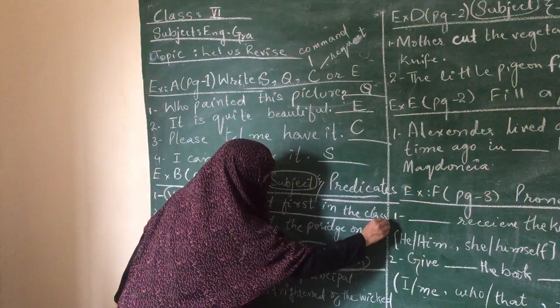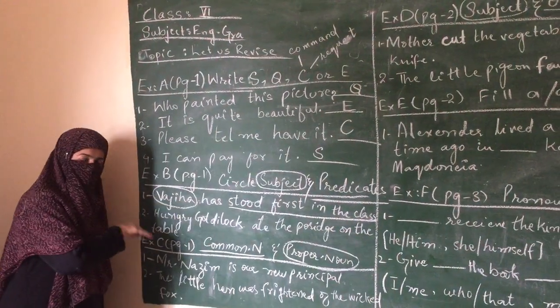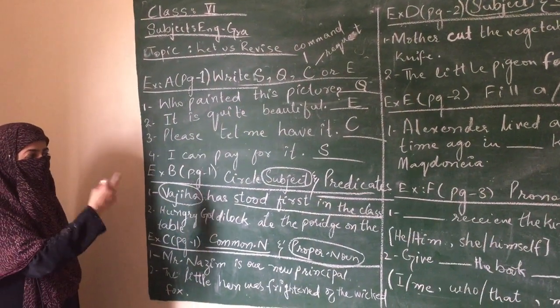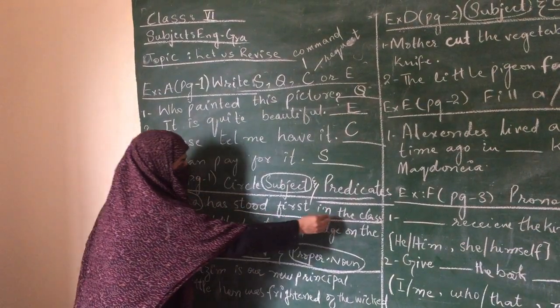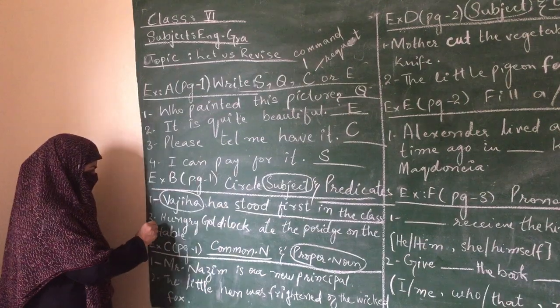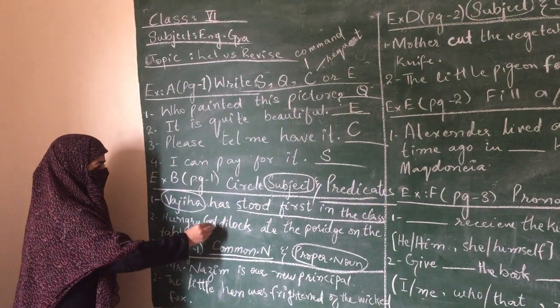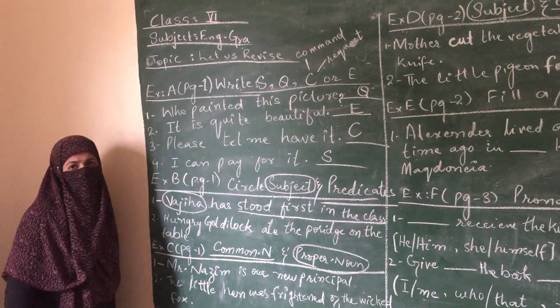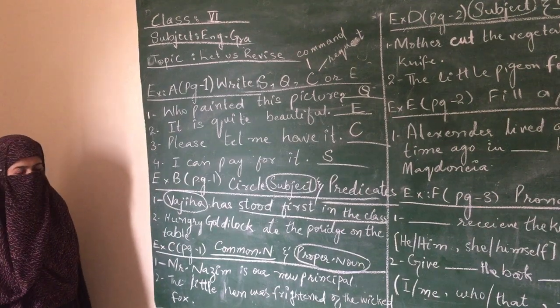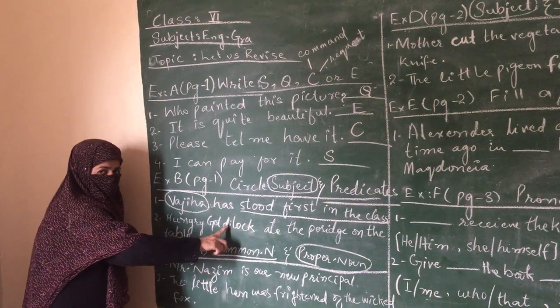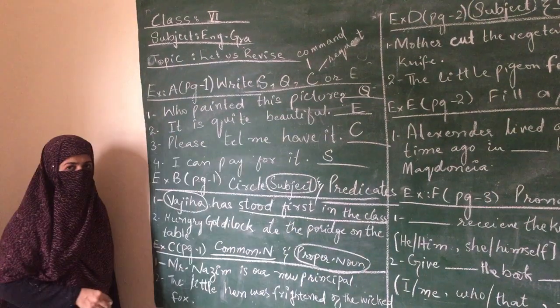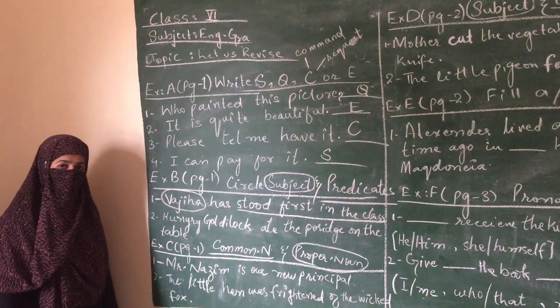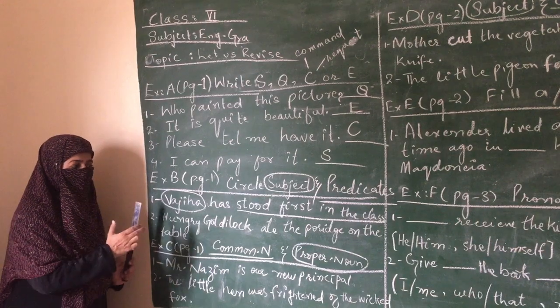Let's see the first sentence. Vajiya has stood first in the class. In this sentence we are talking about Vajiya. Vajiya is our subject, so we are going to circle the word Vajiya. Now in this sentence, what is said about Vajiya? That she stood first in class. The predicate is has stood first in the class.